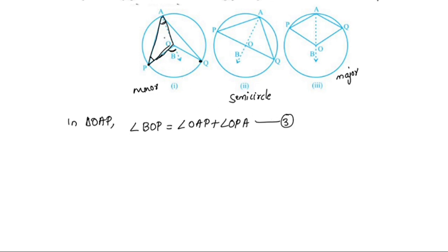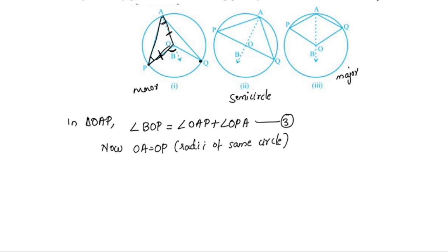In triangle OAP, OA and OP are equal to the two radii. OA is equal to OP because they are radii of the same circle. Since two sides are equal, the angles opposite to them are equal.